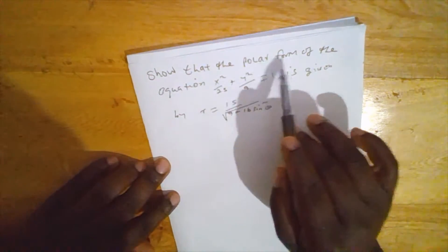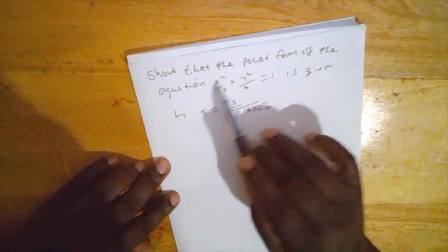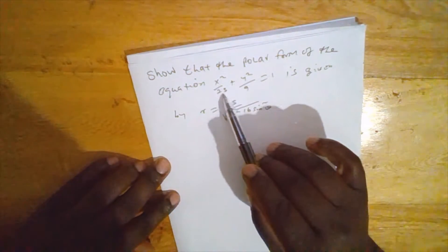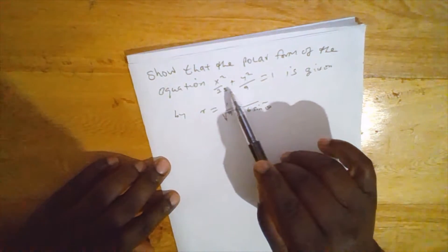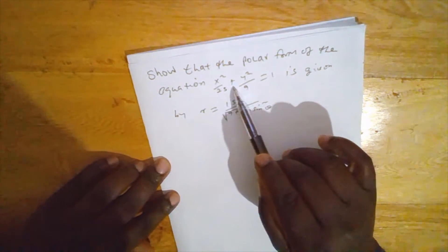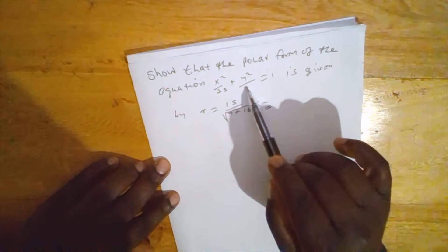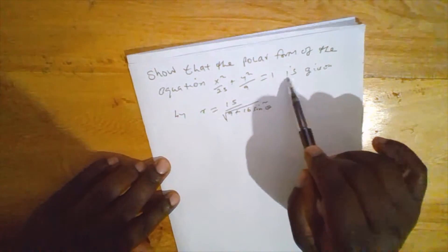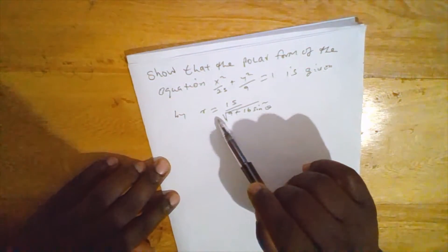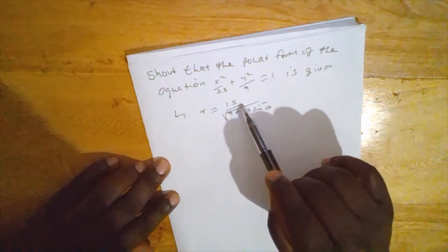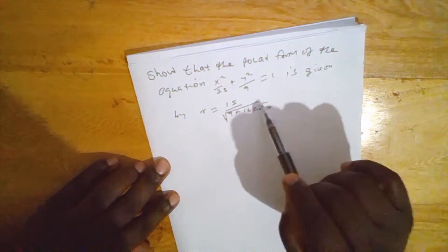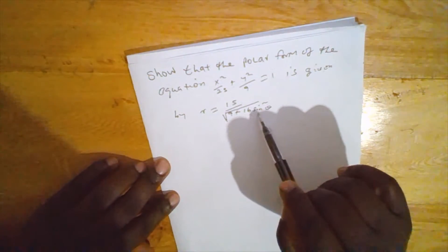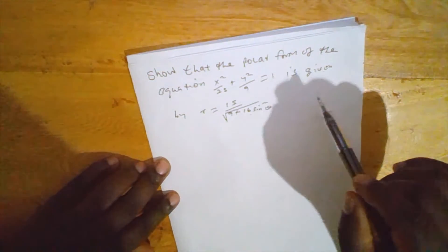Show that the polar form of the equation x squared over 25 plus y squared over 9 equals 1 is given by r equals 15 over the square root of 9 plus 16 sin squared theta.